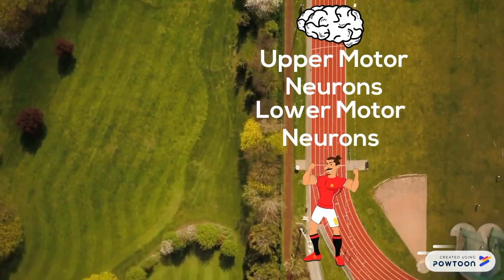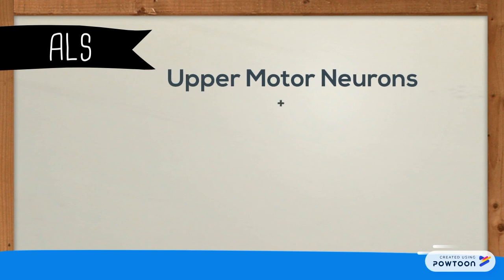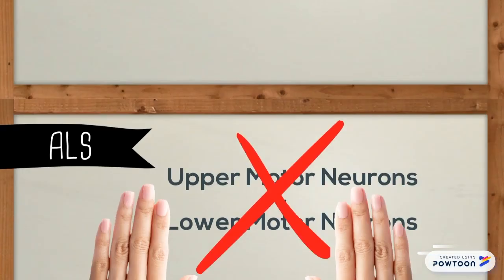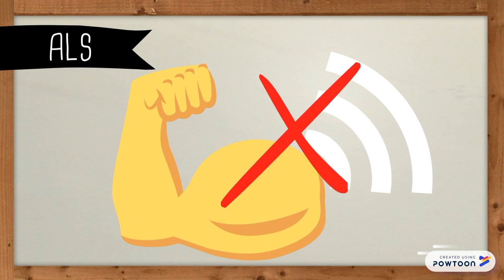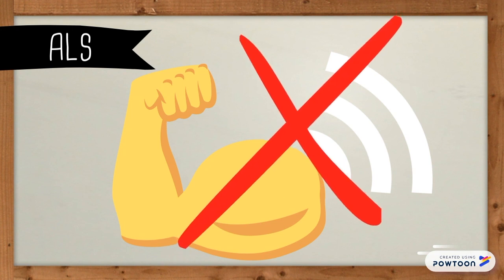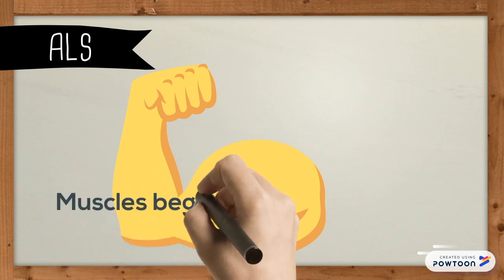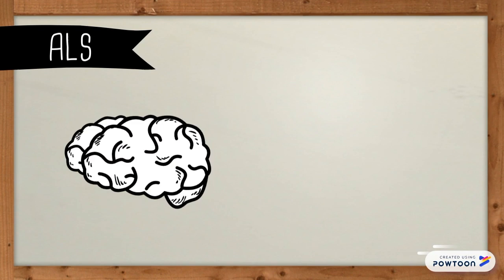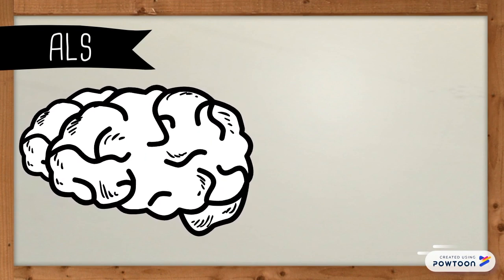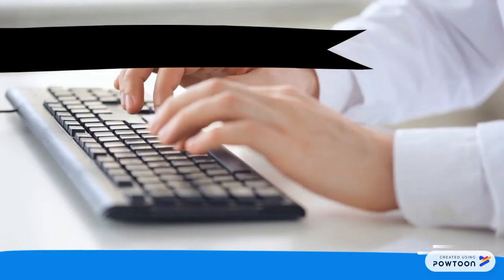These lower motor neurons then complete the race by passing it to the endpoint — the muscle. With ALS, both the upper motor neurons and lower motor neurons are damaged, so the muscles are unable to receive voluntary action signals because of inadequate communication. This causes the muscles to lose their ability to perform proper function and they begin to waste away. Thus, the brain progressively loses the ability to commence and regulate voluntary actions.